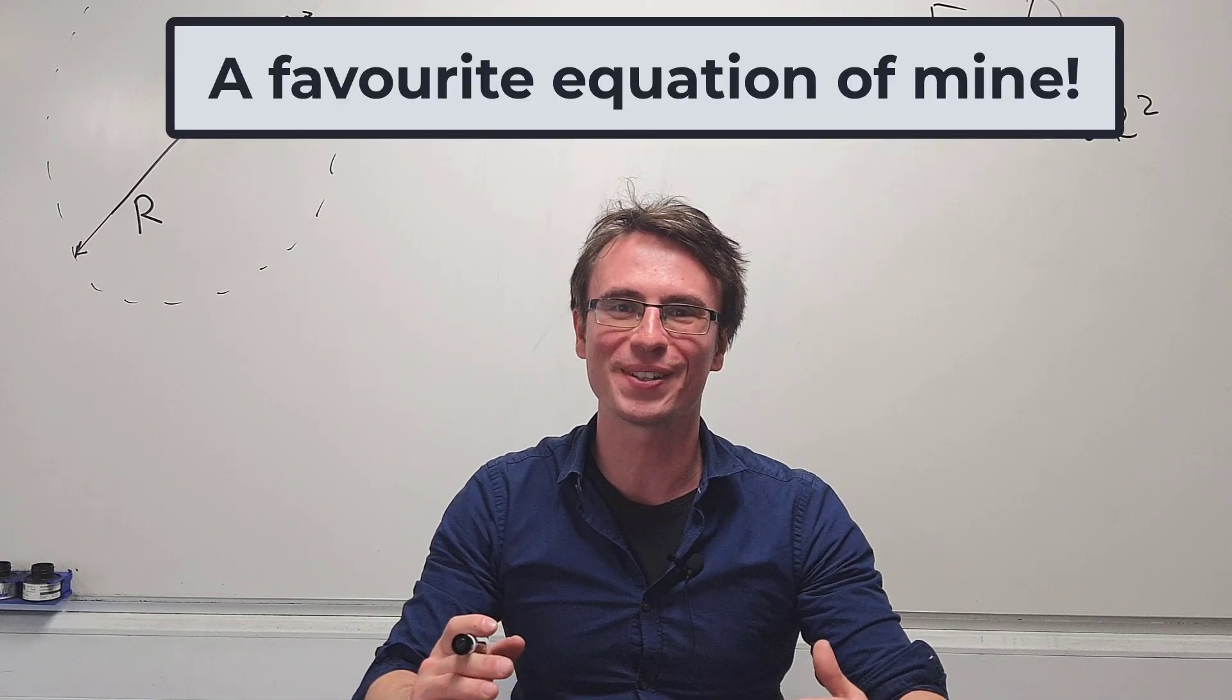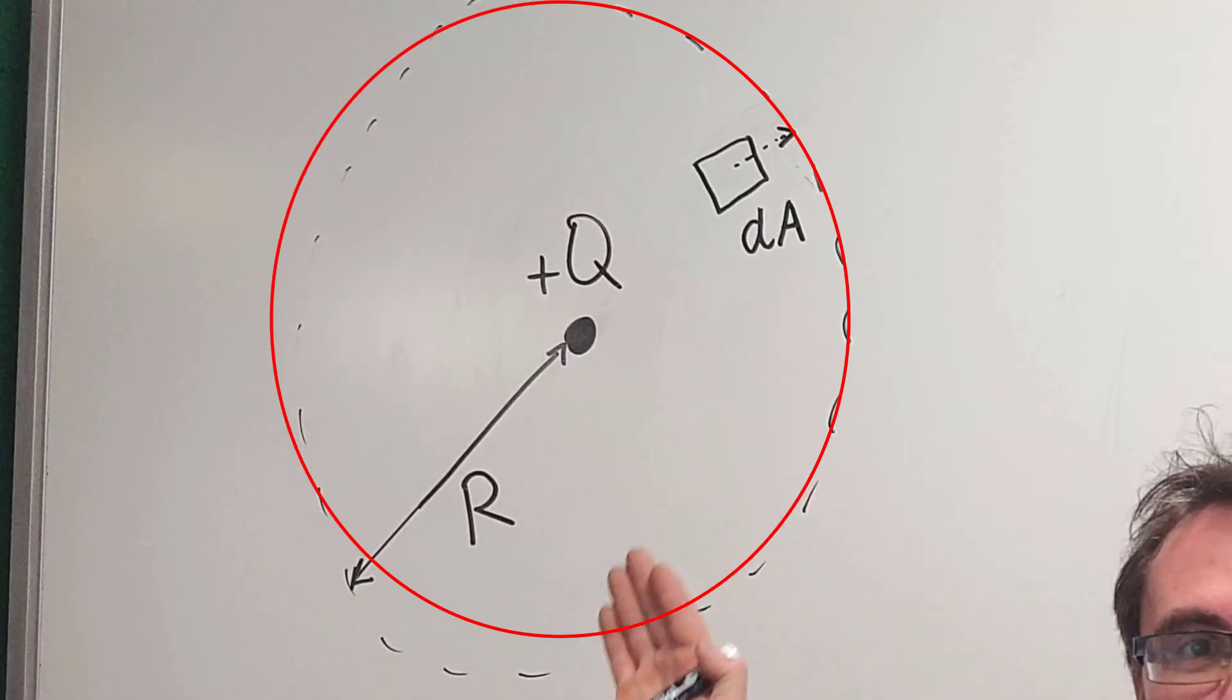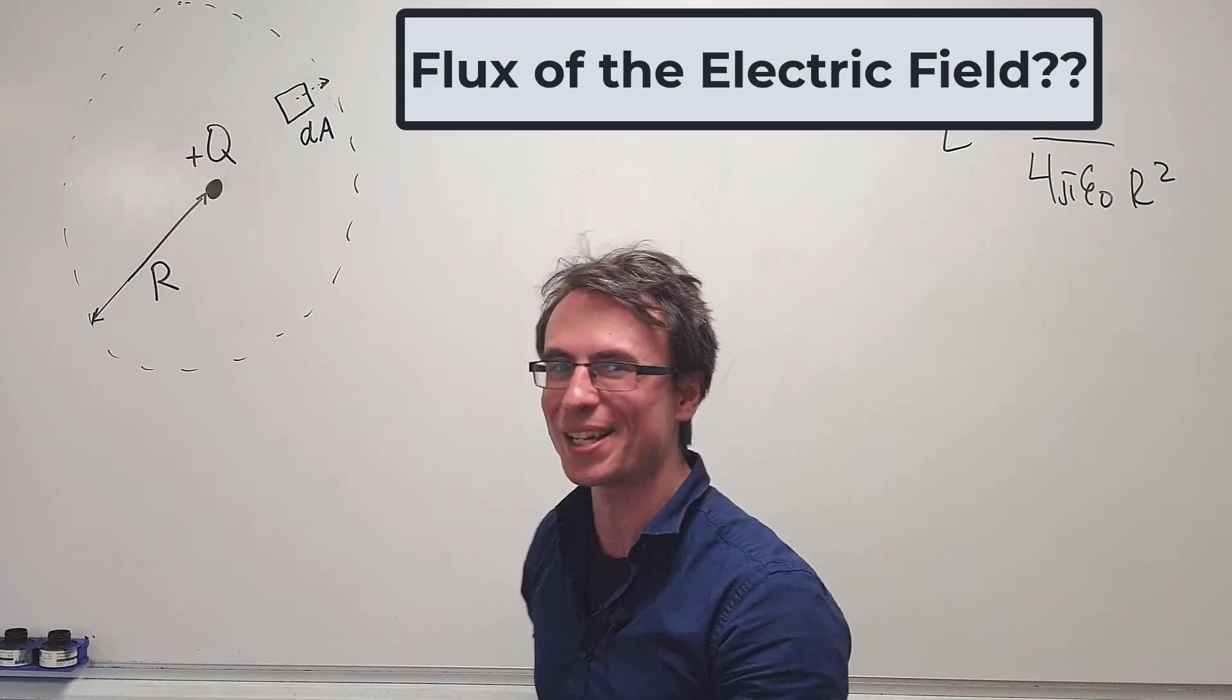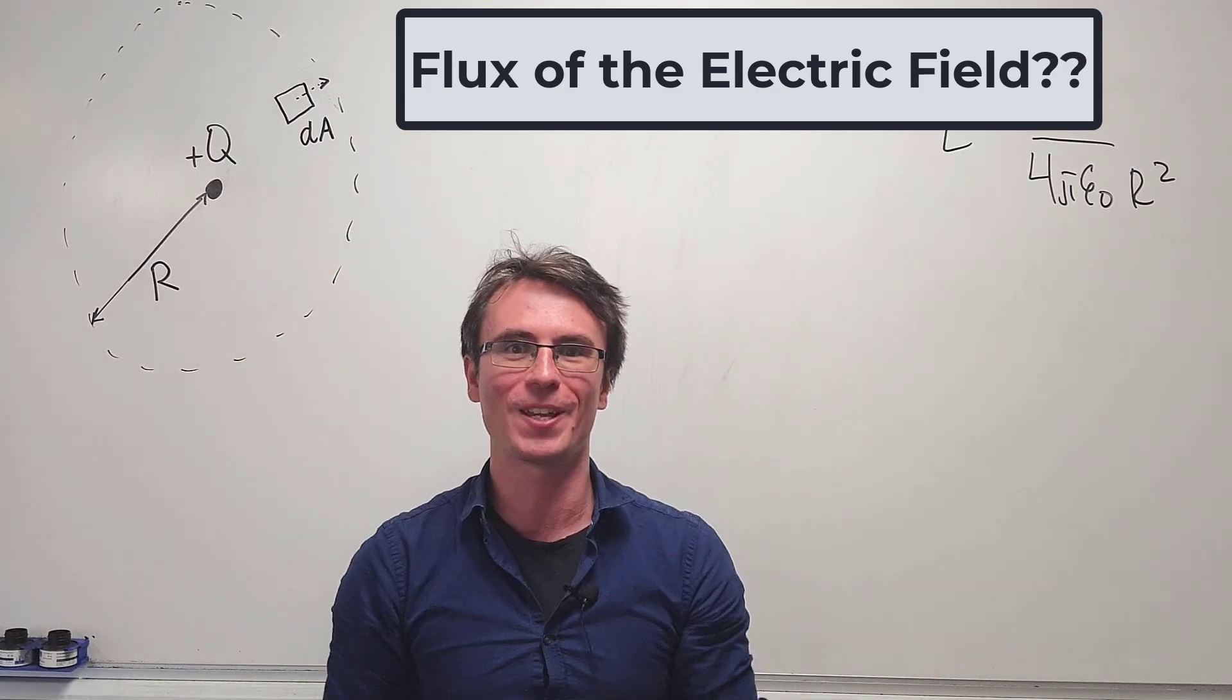Let me show you one of my favorite equations in physics. Consider a sphere of radius r around the charge plus q. What is the flux of the electric field that is coming out of this charge through this sphere?